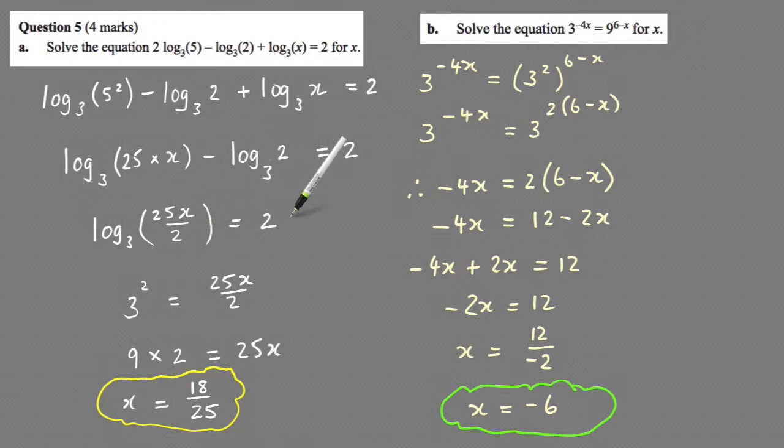From here you need to make a power statement. 3 to the power 2 equals this expression here, which I've done here. 3 squared equals 9, and I've multiplied that by this 2, and that's equal to 25x.